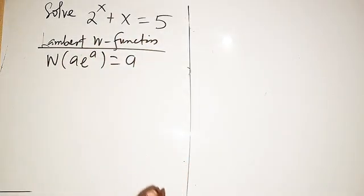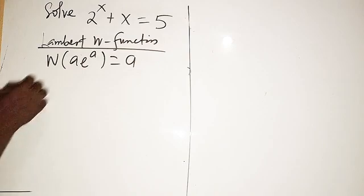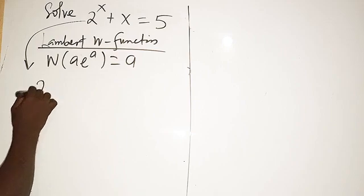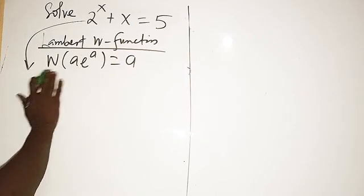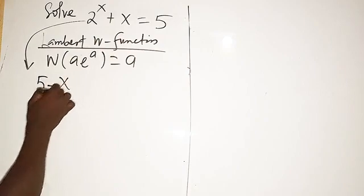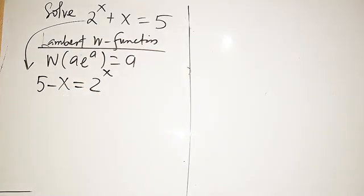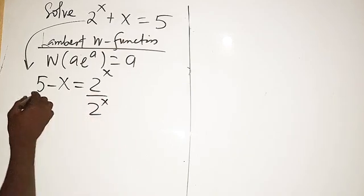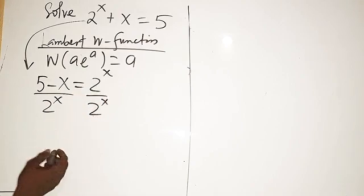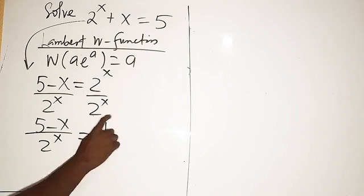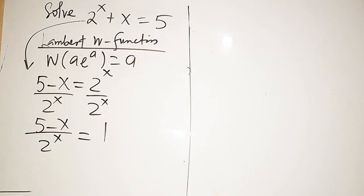We want the right-hand side to be a constant value. From the equation, I can rewrite it by bringing the x terms together: 5 minus x equals 2 to the power x. So I take the x to this side and I have 5 minus x equals 2 to the power x. Now I divide through by 2 to the power x, giving us (5 minus x) over 2 to the power x equals 1. The right-hand side is now the constant 1.